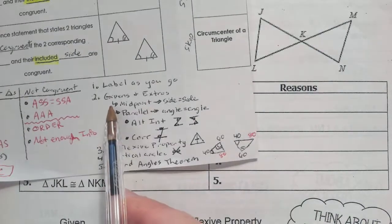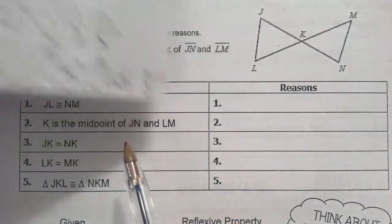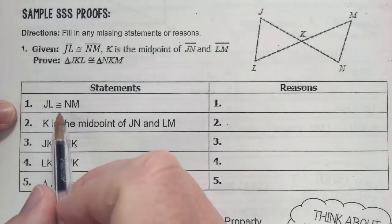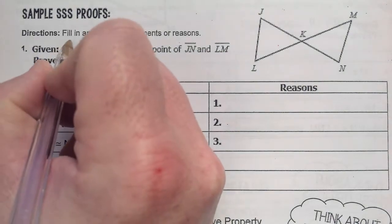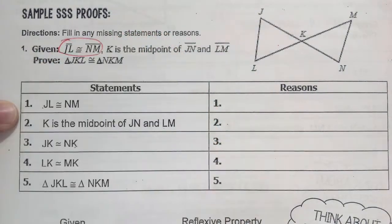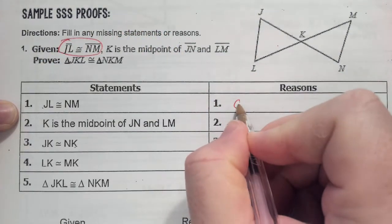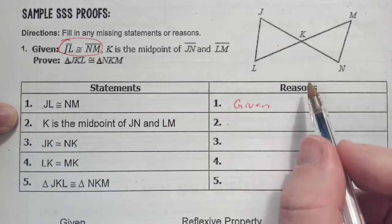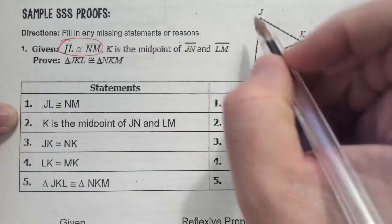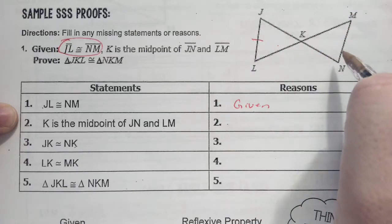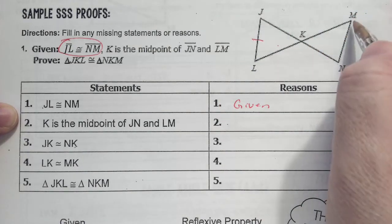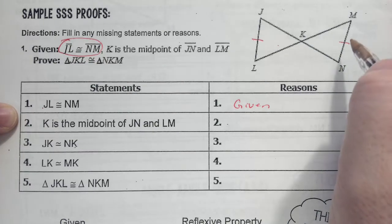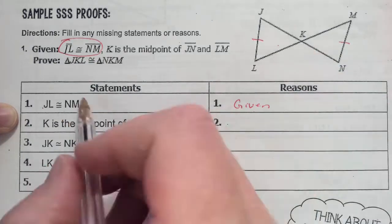The first thing we're going to have to do is do the givens, and make sure you label as you go. So first of all, JL is equal to NM. That right there is here. How did we know that? It was given. And we need to label — every time we say something is equal, label the picture. So here's J to L, I'm going to put a single notch, equal to N to M — put a single notch. So those two are equal to each other, and we label that.